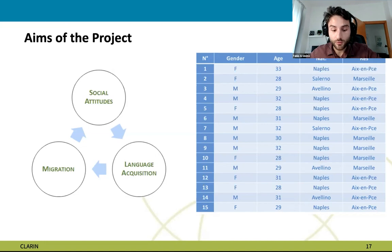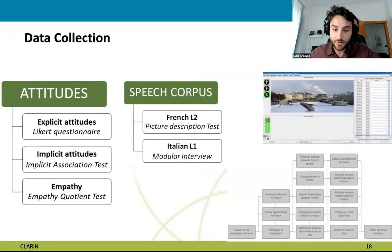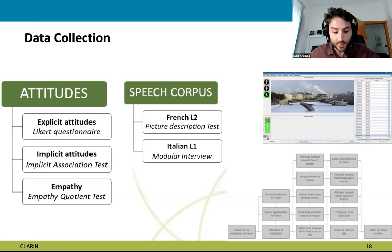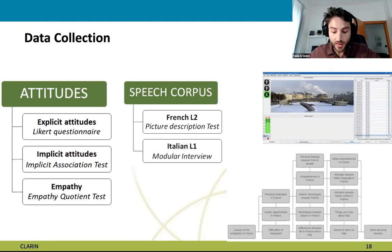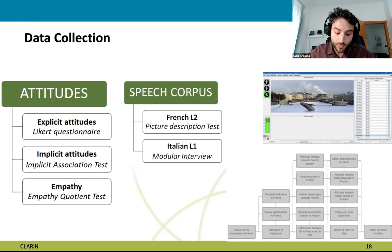Participants were selected to fulfill specific linguistic traits — for instance, to be spontaneous learners of French and to have the same Italian variety, Campanian Italian, as their mother tongue. Particular attention was devoted to the data collection protocol, mediating between classical and more up-to-date linguistic and social-psychological approaches. Three constructs were considered: explicit attitudes — fully conscious, collected through a Likert questionnaire; implicit attitudes — largely unconscious, investigated using an IAT implicit association test protocol; and empathy as a predictor of both attitudes, assessed using an empathy quotient test.